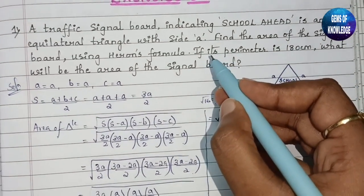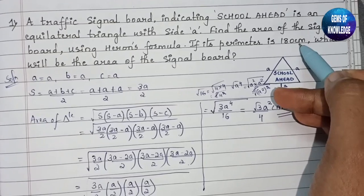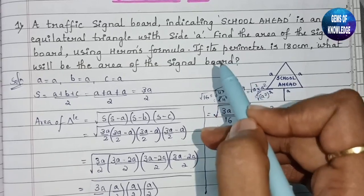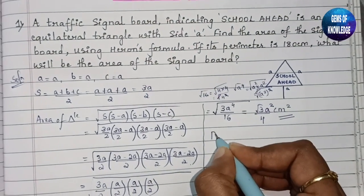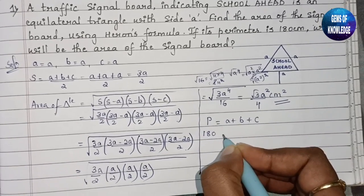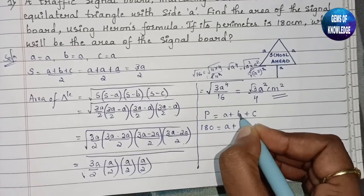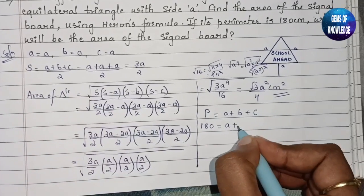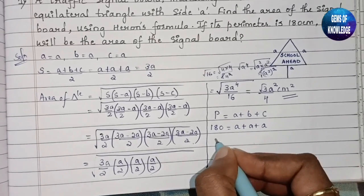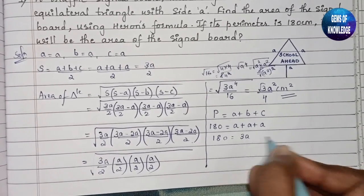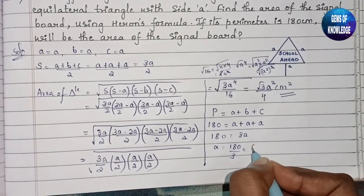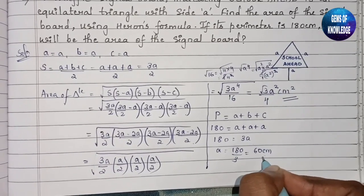Now continuing with the second part of the question: the perimeter is given as 180 centimeter. We know perimeter equals A plus B plus C, so 180 equals A plus A plus A, giving 180 equals 3A. Therefore A equals 180 divided by 3, which is 60 centimeter.